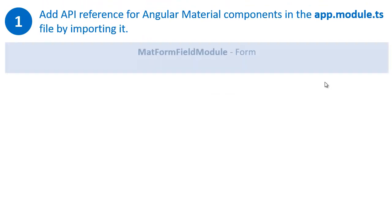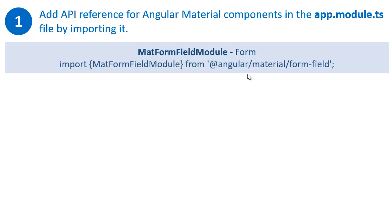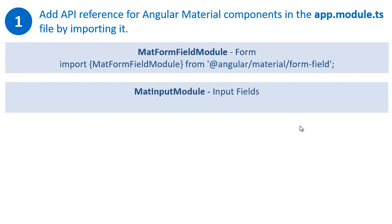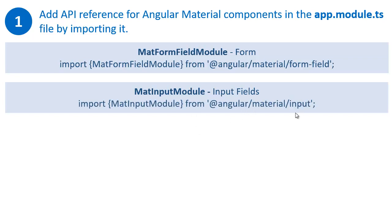The first module we need to import is MatFormFieldModule, which is required for the form we are using for our date picker, and this can be imported from the Angular Material form field library. The second module we need to import is MatInputModule, which is required for the input fields we are using in our date picker — where users can enter the date manually — and this can be imported from the Angular Material input library.